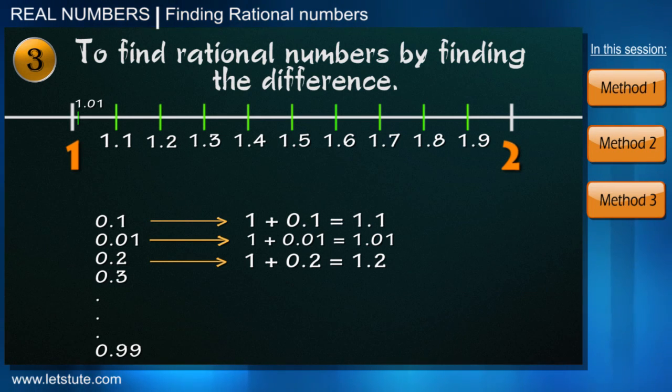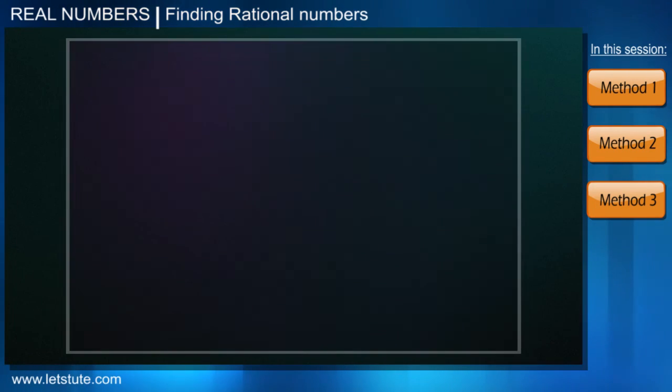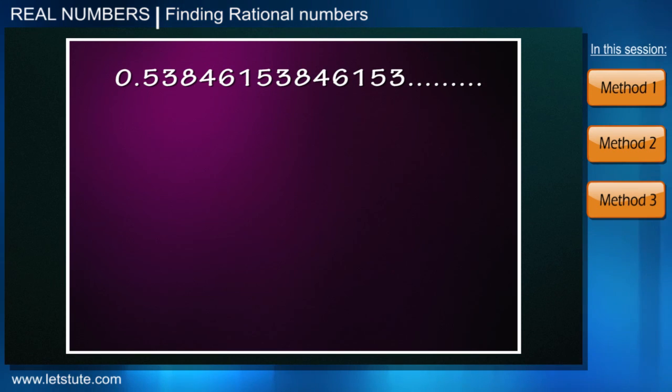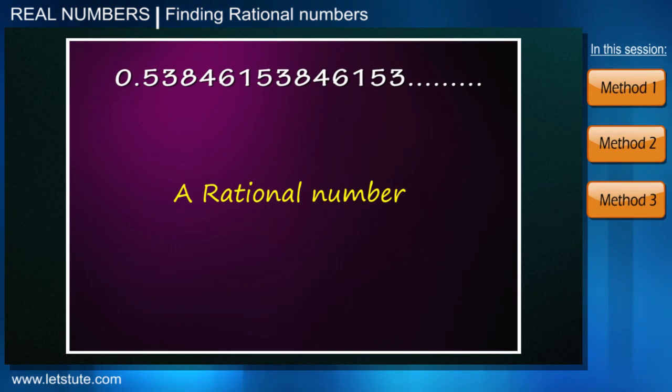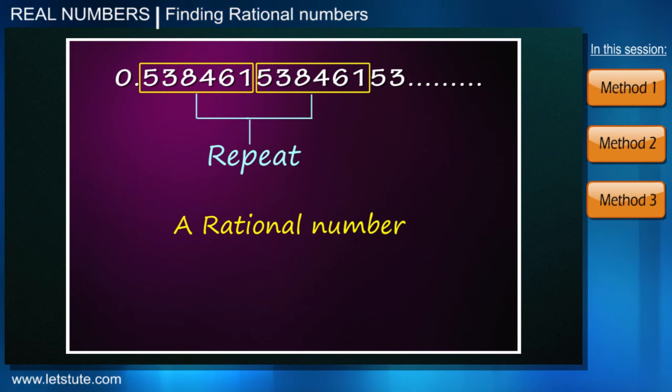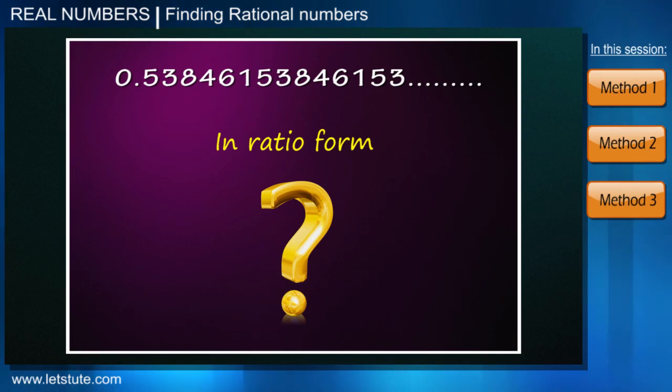So I hope you have understood everything we have learned today. Now lastly I have a question for you. Suppose you have been given a number, say 0.538461 and so on. By looking at this number we can say that this is a rational number because the digits after decimal repeat in a pattern. But if I ask you to write this number in ratio form, then how will you write it? Well, don't worry, we will learn it in our upcoming session.